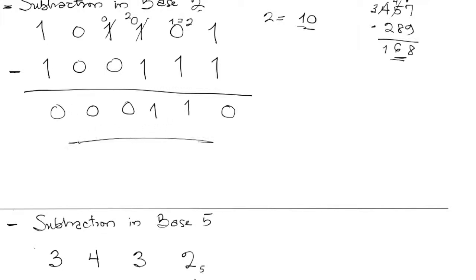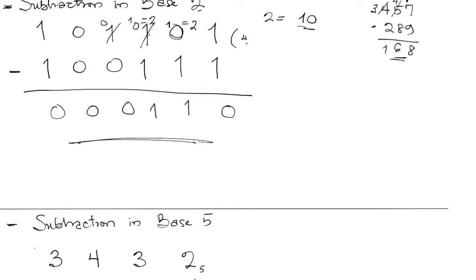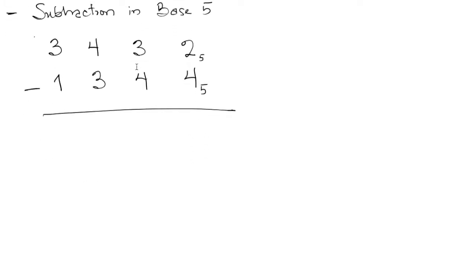The answer is 110. If we also check this: the first number is 45 in base 10, the second is 39, and the answer converts to 6 in base 10, which confirms the arithmetic. That's the way to confirm your arithmetic.